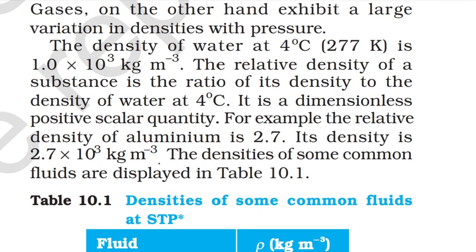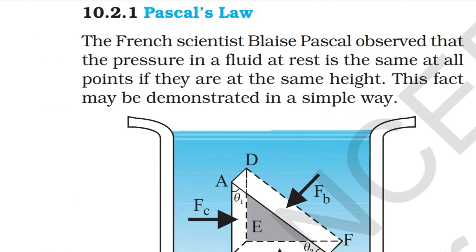A liquid is largely incompressible and its density is therefore nearly constant at all pressures. Gases on the other hand exhibit large variation in densities with pressure. The density of water at 4°C is 1×10³ kg/m³. The relative density of a substance is the ratio of its density to the density of water at 4°C; it is a dimensionless positive scalar quantity. For example, the relative density of aluminium is 2.7, so its density is 2.7×10³ kg/m³.